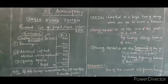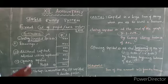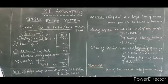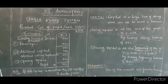The next one: additional capital. Additional capital means capital introduced during the year. The result gives us the adjusted closing capital.